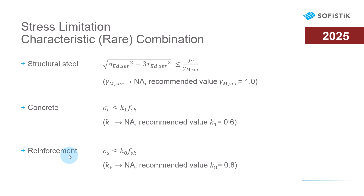The recommendations from pure Eurocode are: the von Mises stress in structural steel should not exceed the characteristic yield strength. Compression stress in concrete should be limited to 60% of the characteristic compression strength. And for the reinforcements, to 80% of the characteristic yield strength.